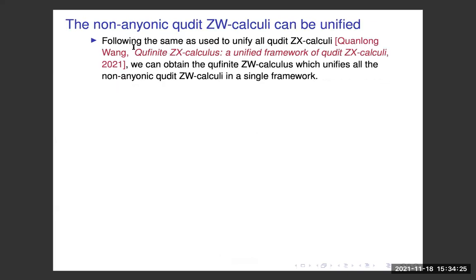If you want to unify all ZW calculi across dimensions, you can do something similar to what was done for the QD-ZX calculus — using a dimension splitter to unify them into a single ZW calculus. I just mention this briefly without going into details.